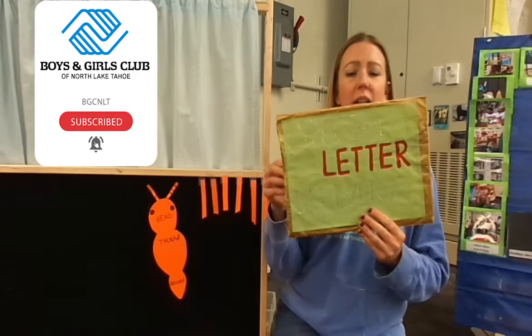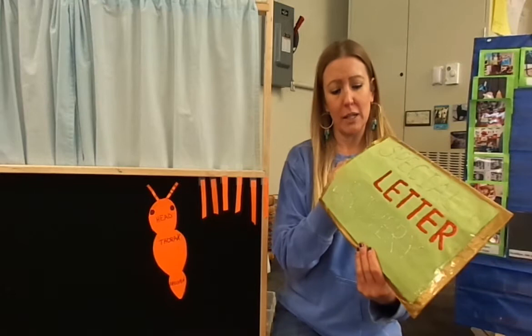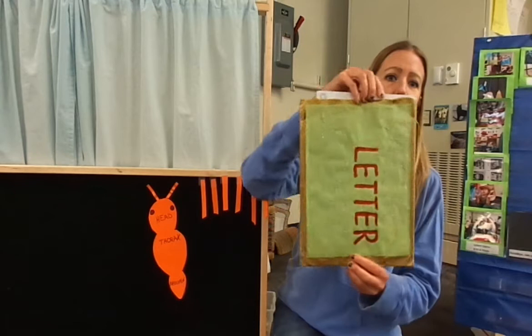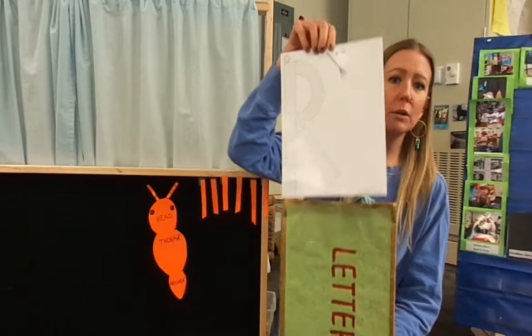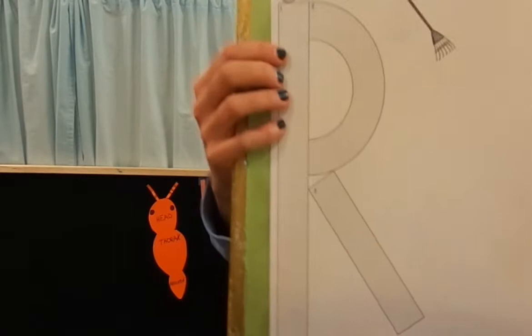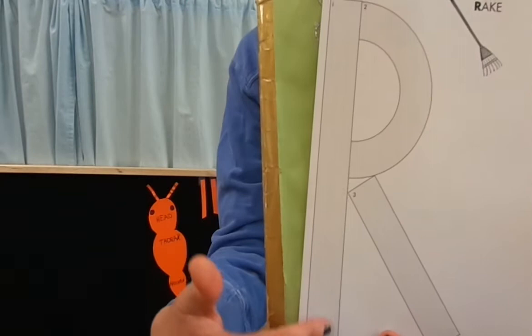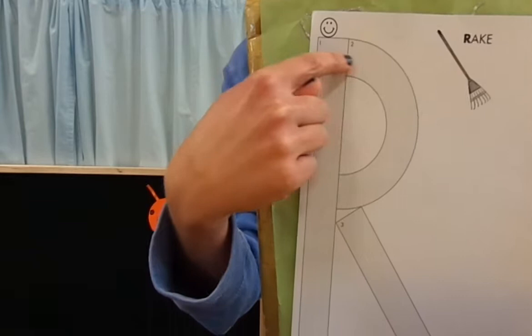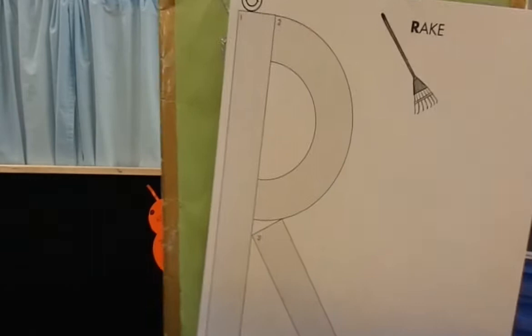Let's start with our special letter delivery. I wonder what letter it could be — we have a different one today. It is the letter R. Big line down, small curve at the top, and a line diagonal kick out. Big line down, round and down.